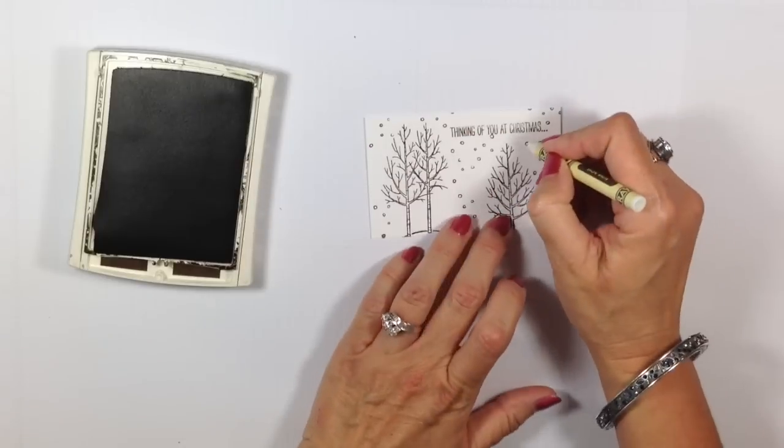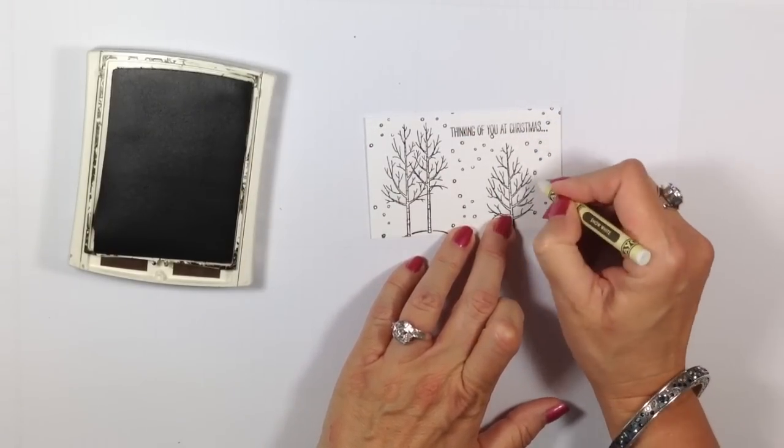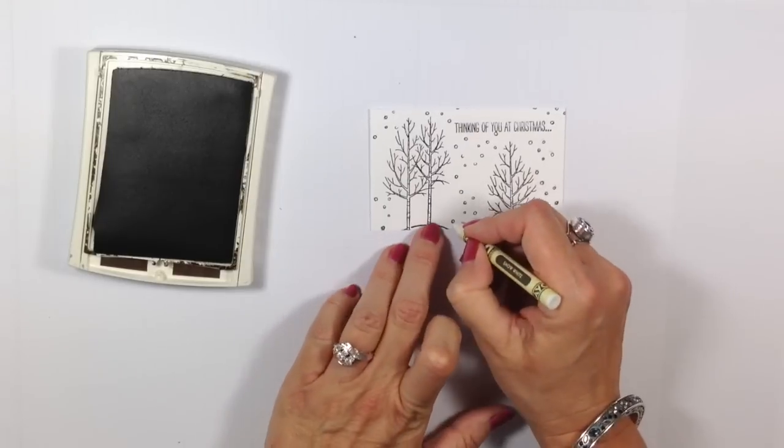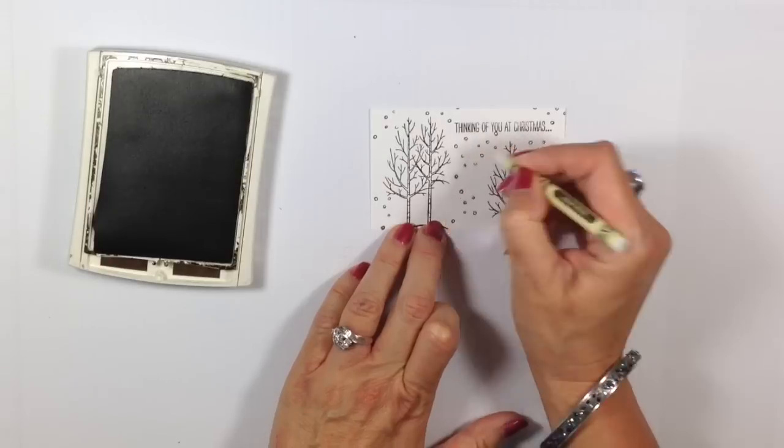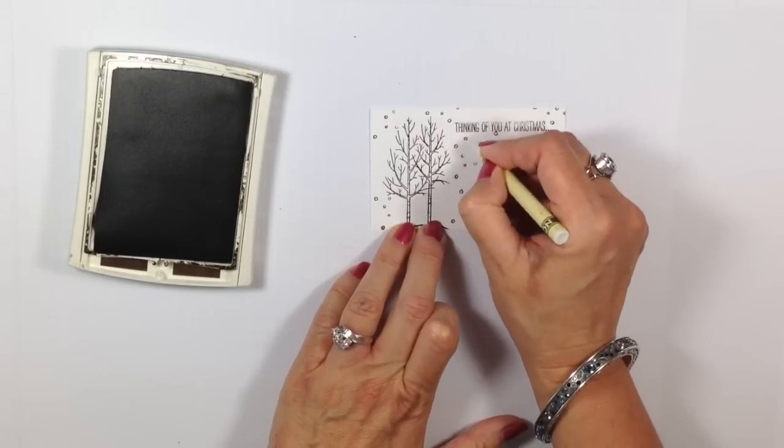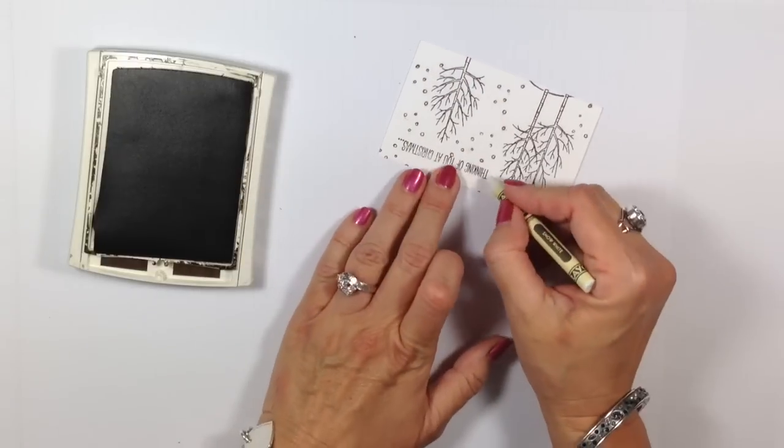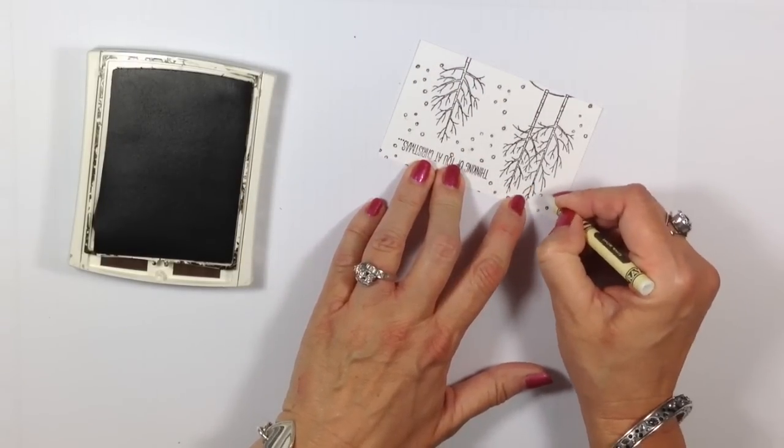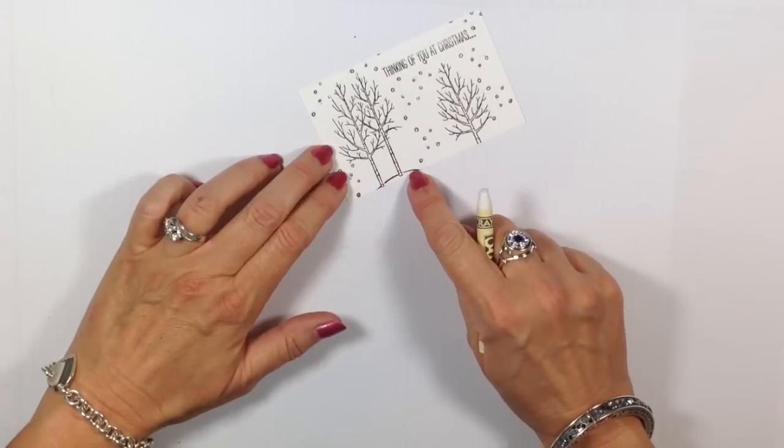Now we're going to take that same crayon and we're just going to make dots on our snowflake. Keep yourself going in a pattern because it'll be real easy to lose track of what snowflake you colored on and which ones you haven't. I'm just kind of going up and down.